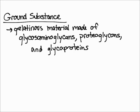In this video I'm going to talk about what ground substance is. Ground substance is essentially a gelatinous material made up of glycosaminoglycans, which are also called GAGs, proteoglycans, and glycoproteins. This gel-like substance helps absorb compression and essentially protects your body. Ground substance is located all throughout your body.